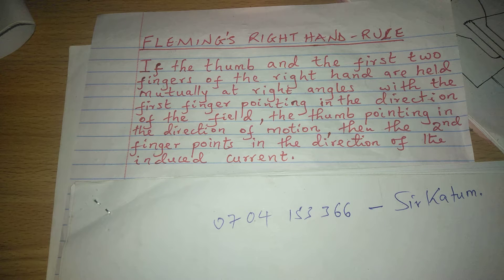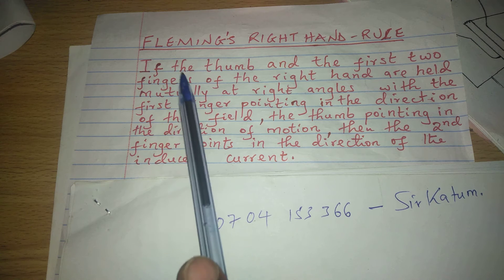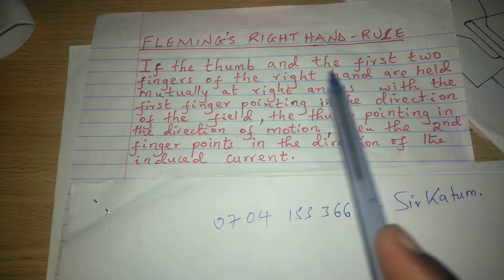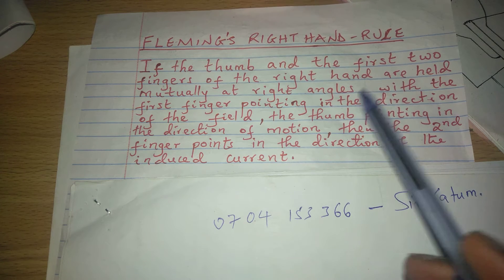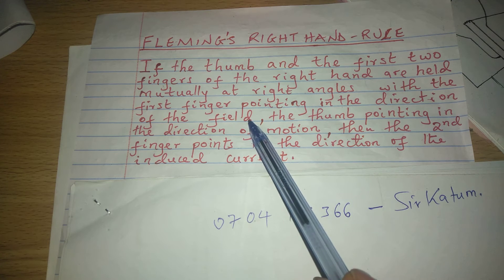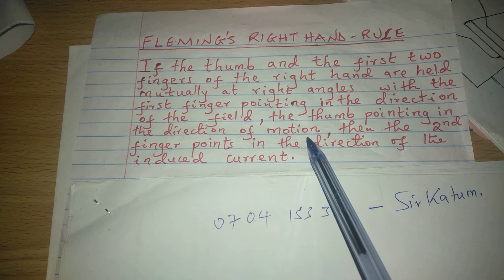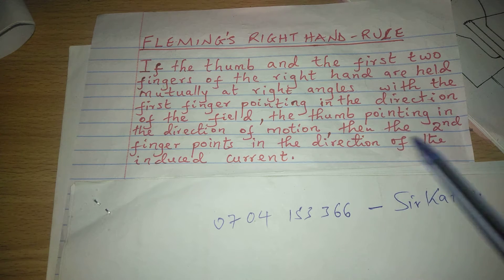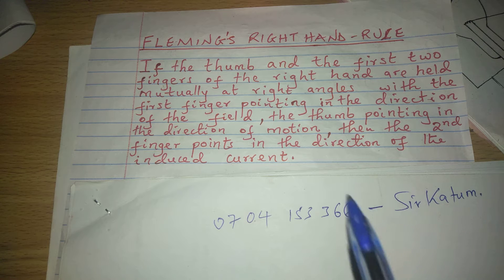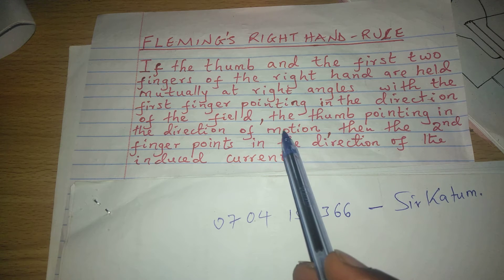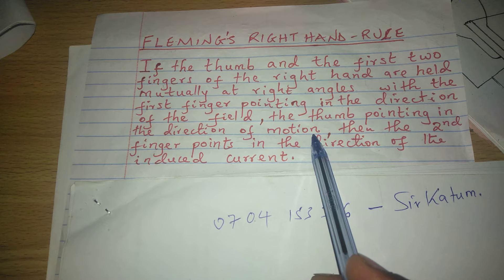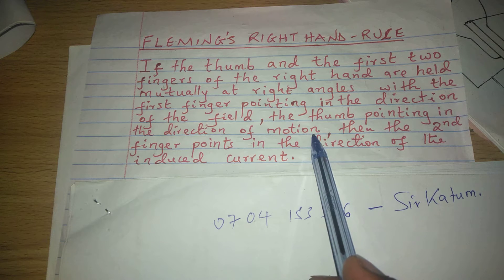Fleming's right hand rule says that if the thumb and the first two fingers of the right hand are held mutually at right angles, such that the first finger is pointing in the direction of the magnetic field and the thumb pointing in the direction of the motion of the conductor, then the second finger points in the direction of the induced current.